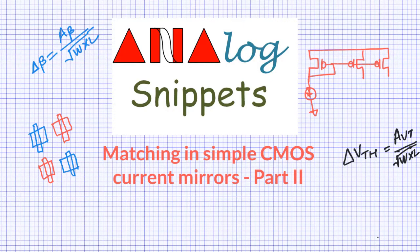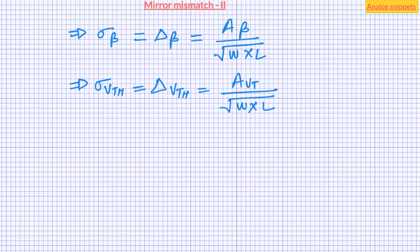Hello, this video is the second installment of current mirror matching. Let's start at the mismatch equation of current factor beta and threshold voltage. These equations are known as Pelgrom's equations, proposed in the landmark paper on matching properties of MOS transistors.